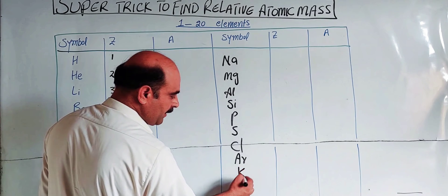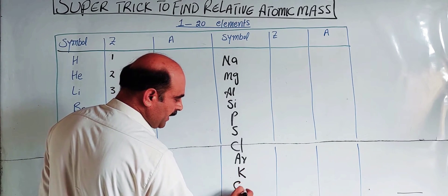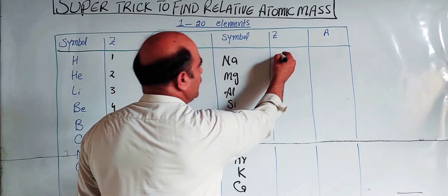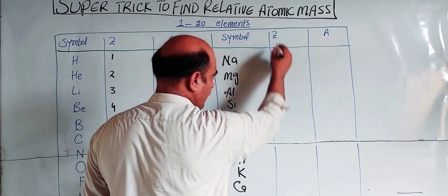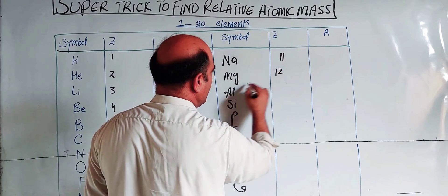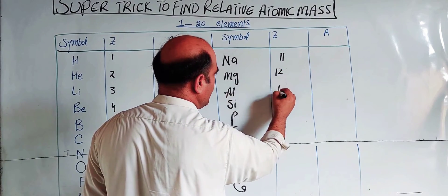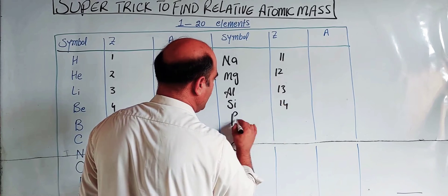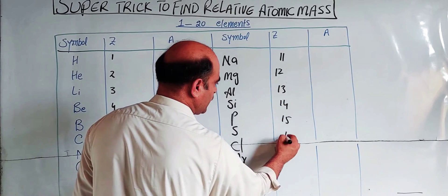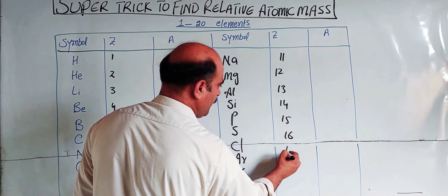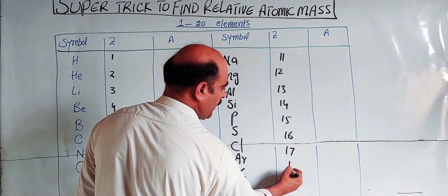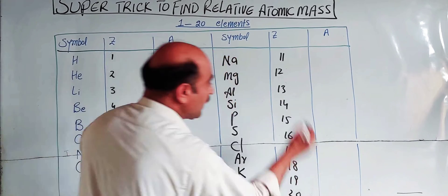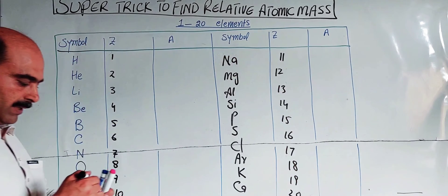Continuing from atomic number 11 to 20: Sodium 11, Magnesium 12, Aluminium 13, Silicon 14, Phosphorus 15, Sulfur 16, Chlorine 17, Argon 18, Potassium 19, and Calcium 20. These are the atomic numbers for elements 1 to 20.